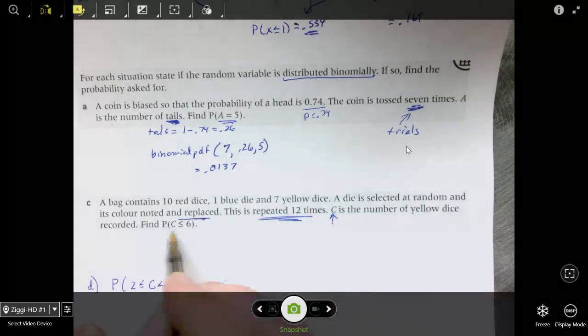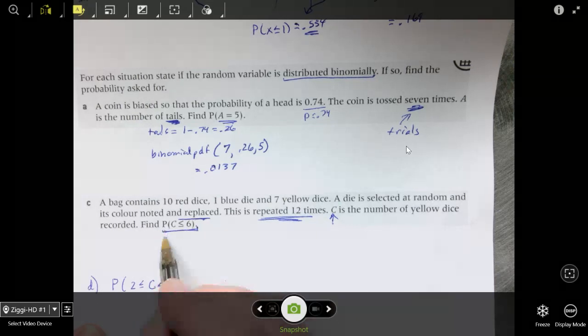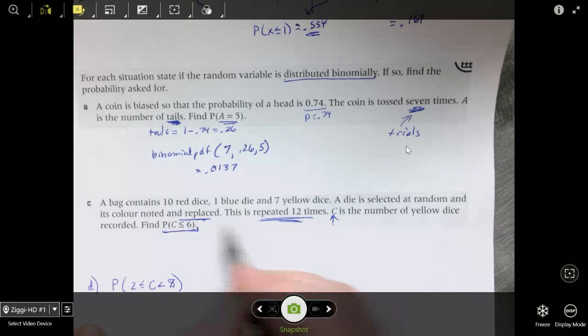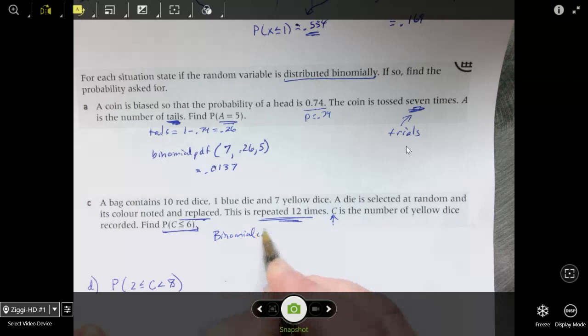And we're going to enter 6 because it just simply says less than or equal to 6. So I go binomial, distribution, trials are 12, probability is 7 eighteenths. You can change it to a decimal if you want or let the computer do it. And that's 6, simply 0.861.